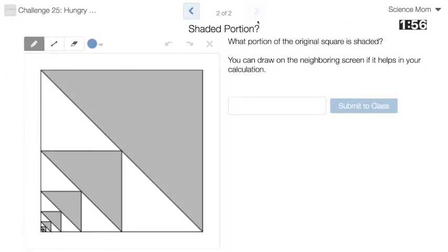There we go. What portion of the original square is shaded? So obviously one half of this big square is shaded. Hmm. This one flips over and fills up to that.